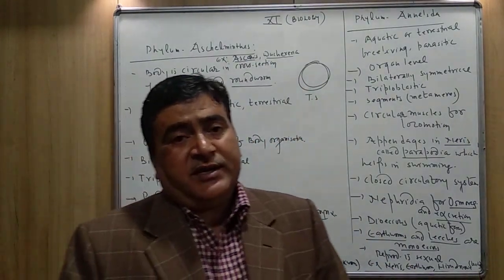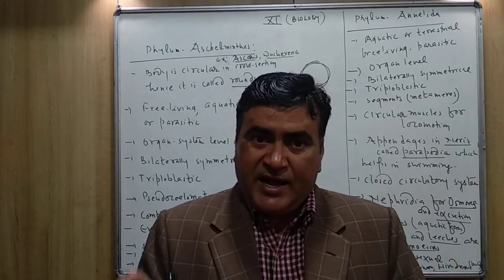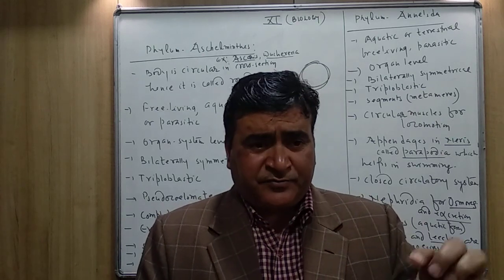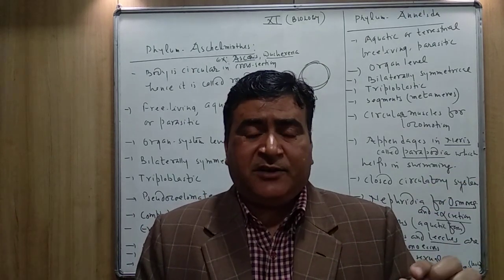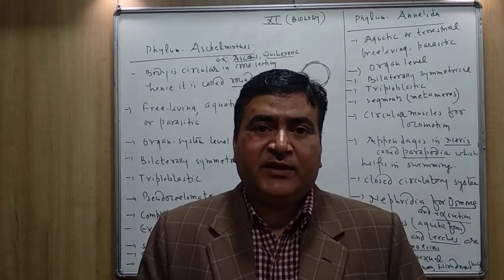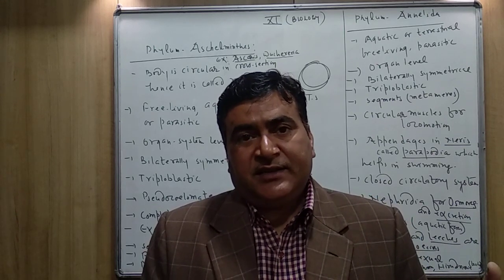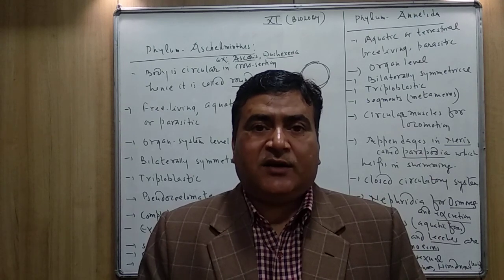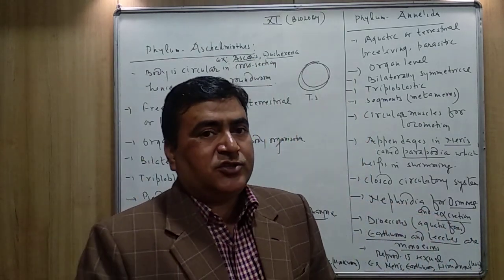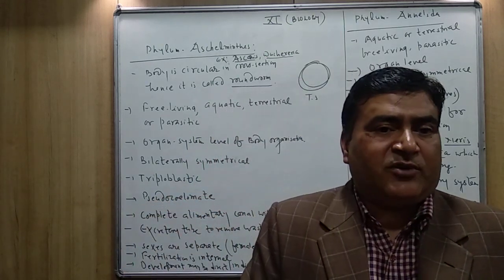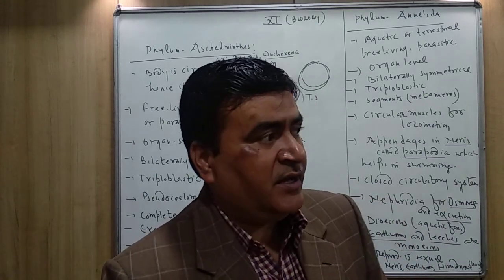The body coelom is pseudocoelomate. The coelom is the body cavity found between the body wall and the gut. In Aschelminths, if you cut the cross-section you observe small patches or cavities scattered in the body, lined by mesoderm. These small scattered cavities are not a complete body cavity; instead, small pouches are present in place of a proper body cavity. That is why they are called pseudocoelomate.